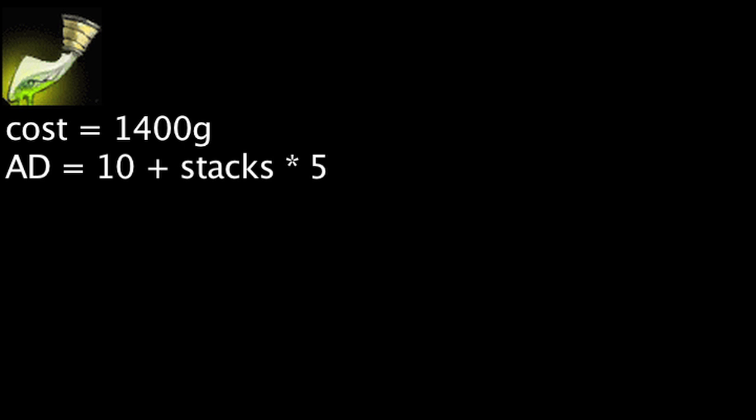Let's take a look at the item now. The Sword of the Occult costs 1400 gold and grants 10 attack damage. It will also grant 5 additional attack damage per stack and 20% attack speed at 20 stacks.